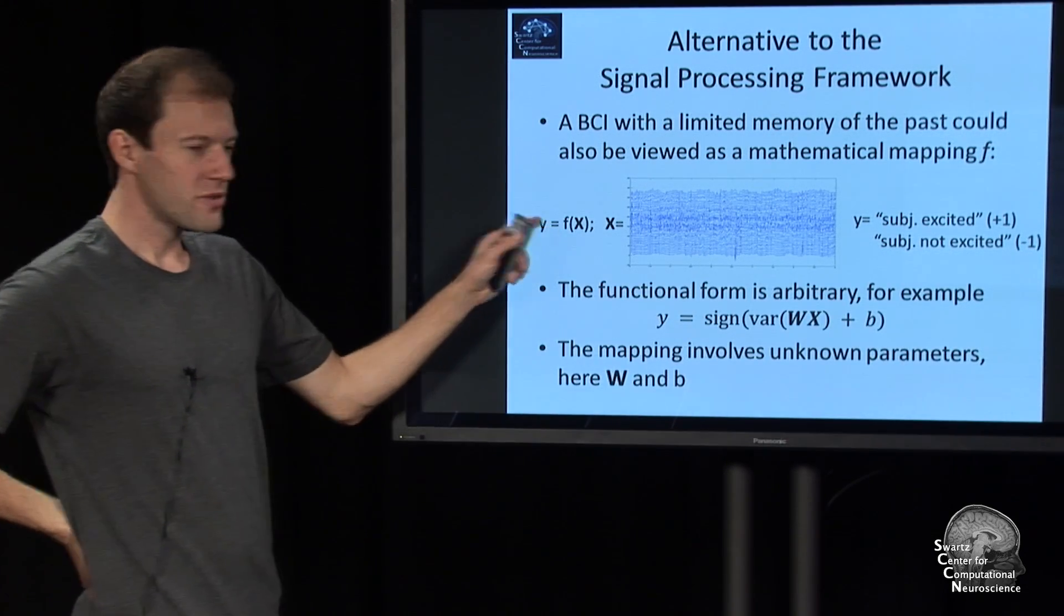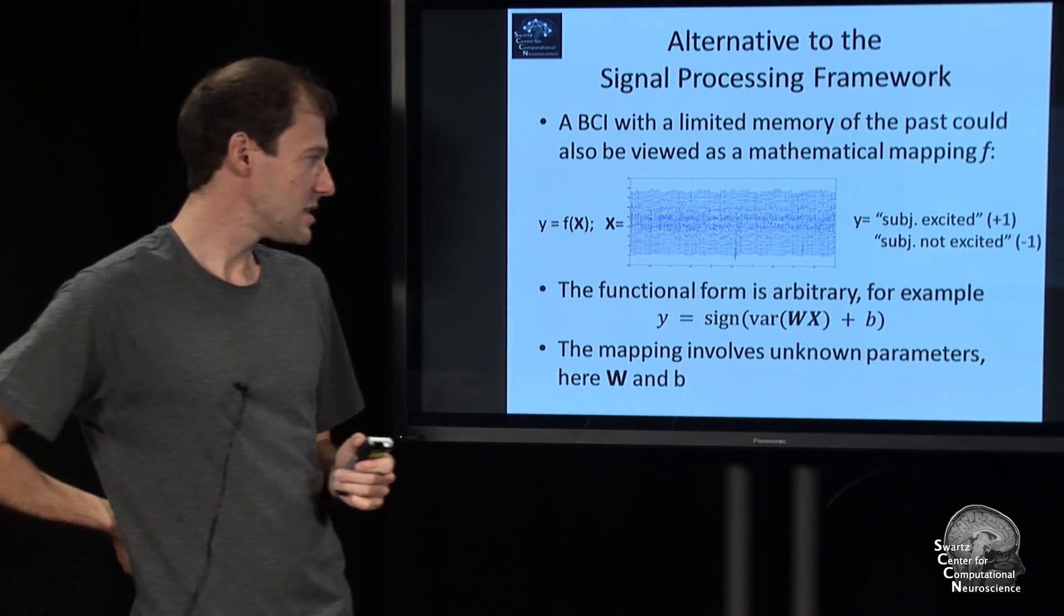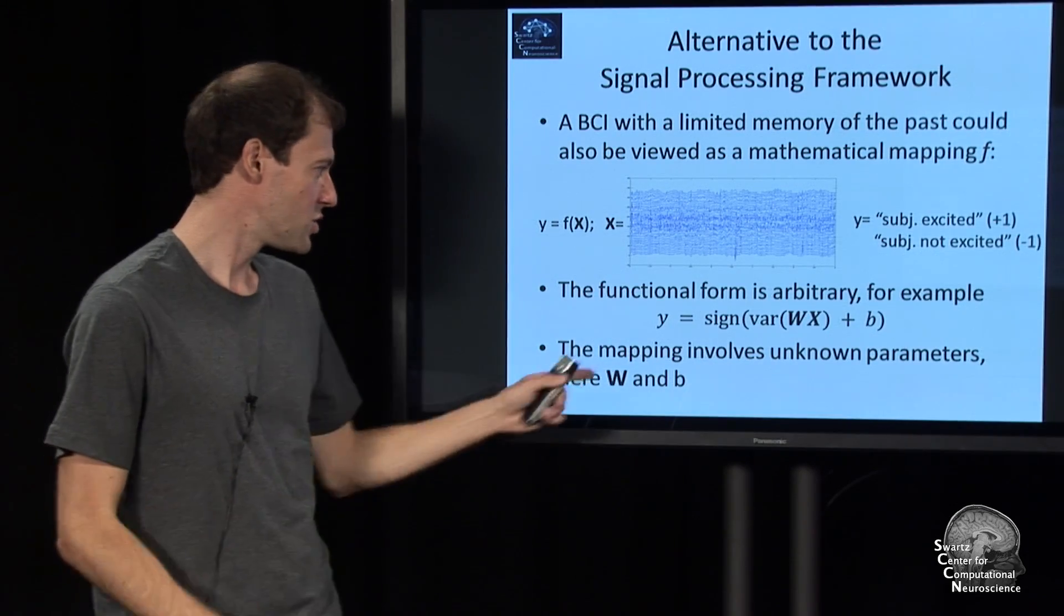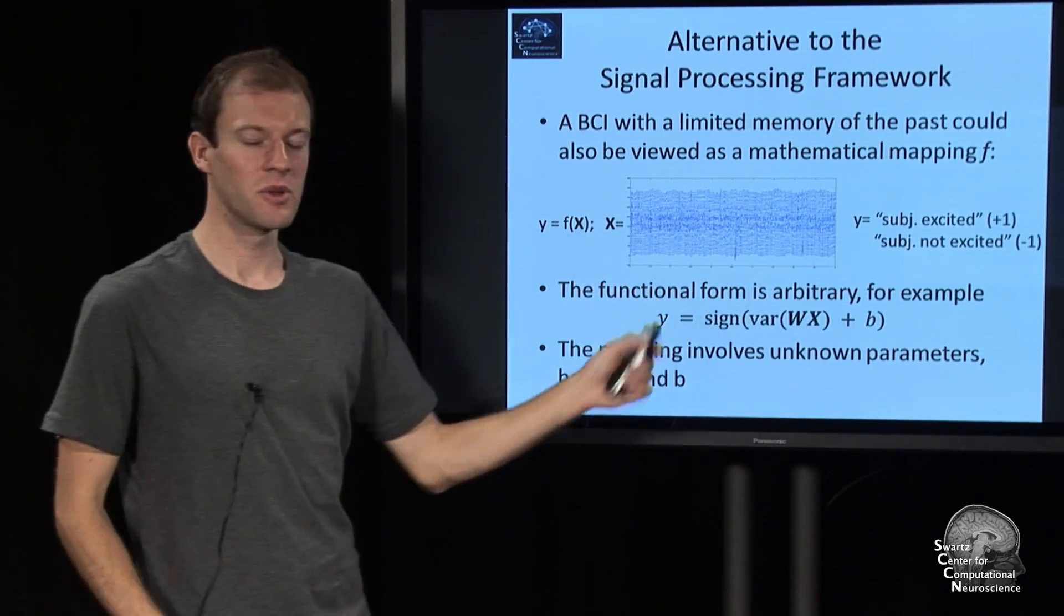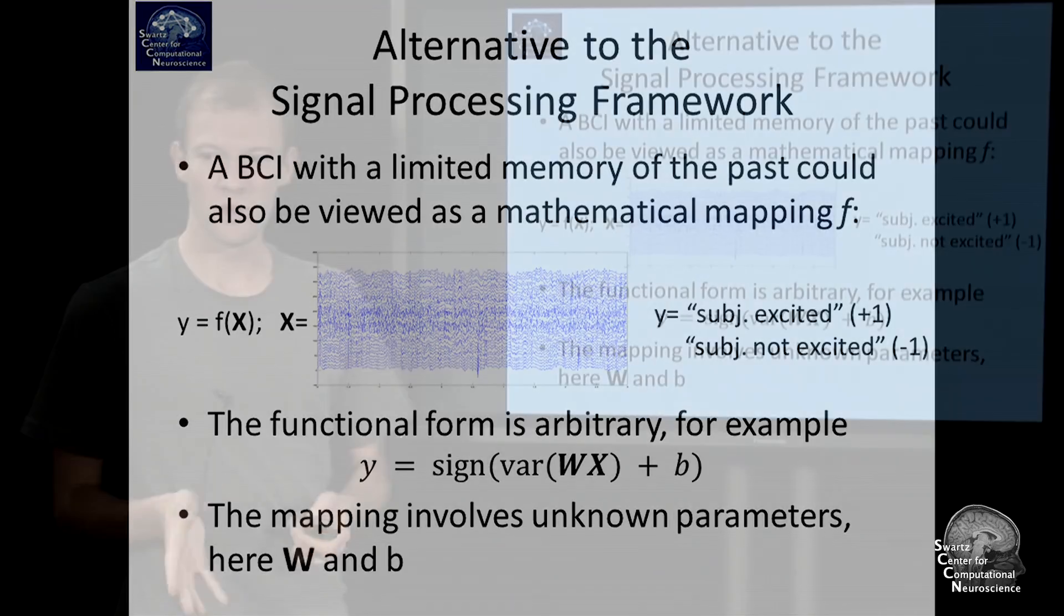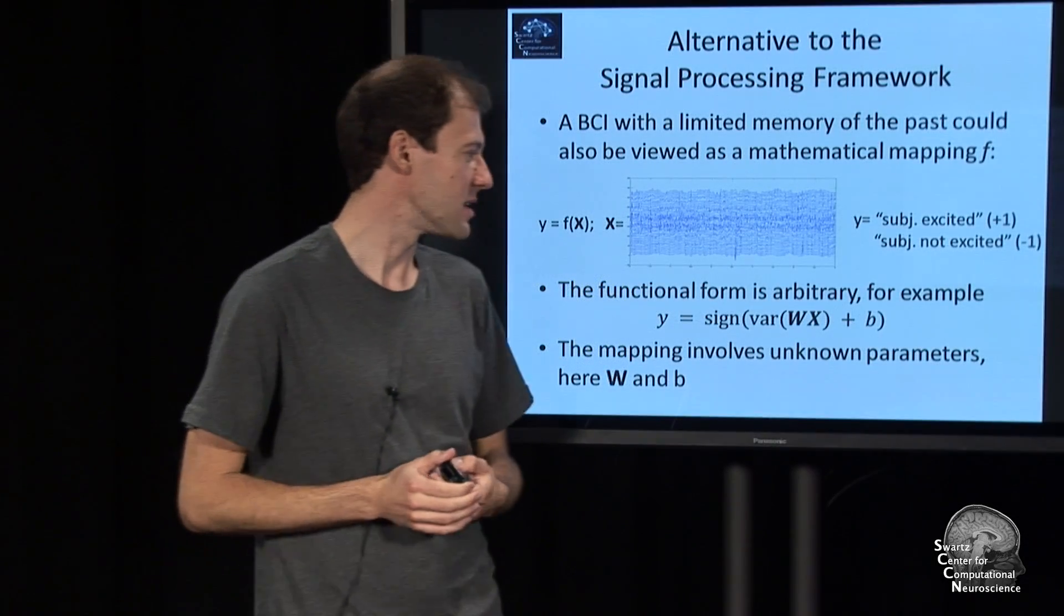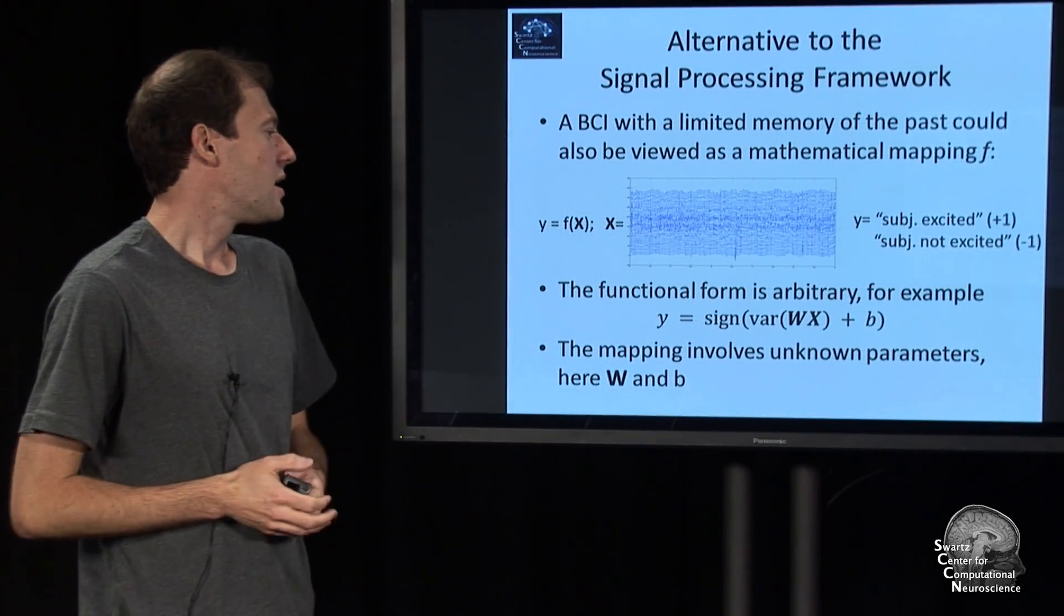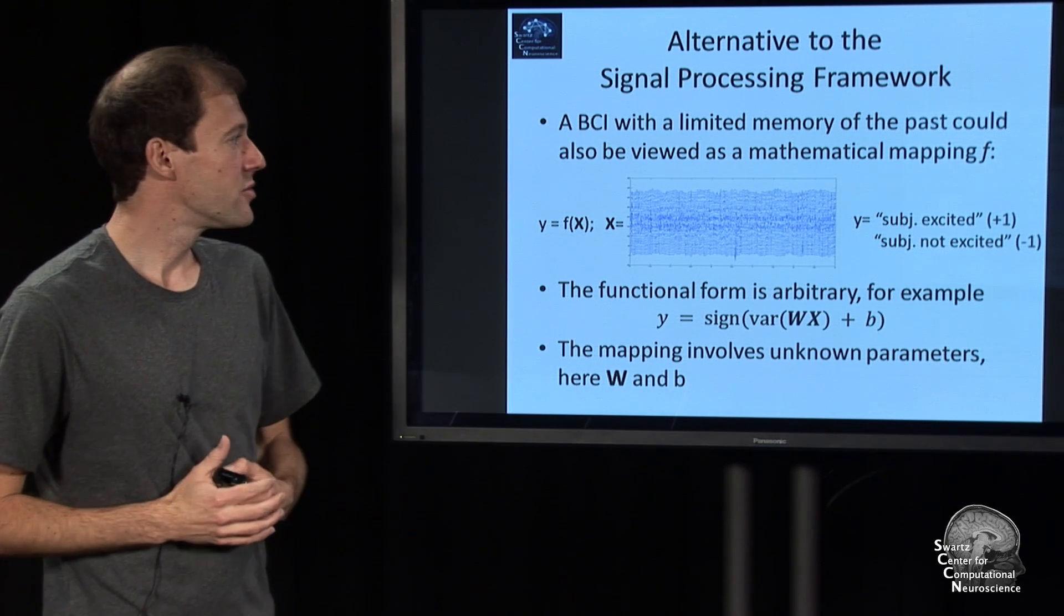The form of this function is basically arbitrary. It's just a function of form, like this example here. What's interesting is it depends not just on x, but usually it tends to depend on some extra parameters, like this W here or the b here. These parameters turn out to be usually not known very precisely in advance or ad hoc.